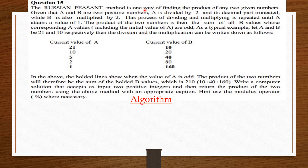The Russian peasant method is one way of finding the product of any two given numbers. Given that a and b are two positive numbers, a is divided by 2 and the decimal part truncated, while b is also multiplied by 2. The process of dividing and multiplying is repeated until a attains a value of 1. The product of the two numbers is then the sum of all b values whose corresponding a values, including the initial value of a, are odd.